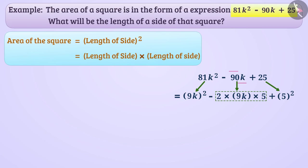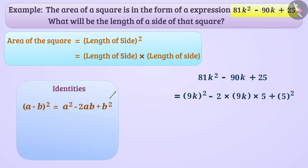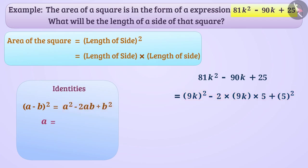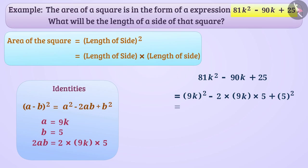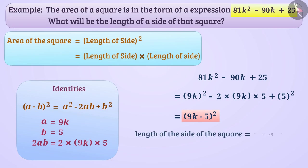Observe that the second term is negative. We see that this expression corresponds to the right side of the identity: a minus b, whole square, is equal to a square minus 2ab plus b square. Where a is equal to 9k, b is equal to 5, and 2ab is equal to 2 multiplied by 9k multiplied by 5, that is 90k. Therefore, we can factorize this expression as 9k minus 5, whole square. That is, the length of the side of the square is 9k minus 5.